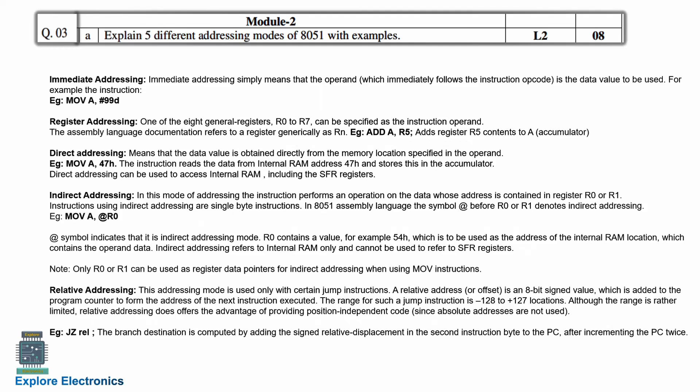In immediate addressing mode, an immediate value is specified with a hash symbol — for example, MOV A, #99H. Then register addressing mode will be used for instructions like ADD A, R5. R5 is a register here. R0 to R7 registers can be used. If the instruction consists of R0, R1, R2, R3, R4 — any of R0 to R7 — we can call it register addressing.